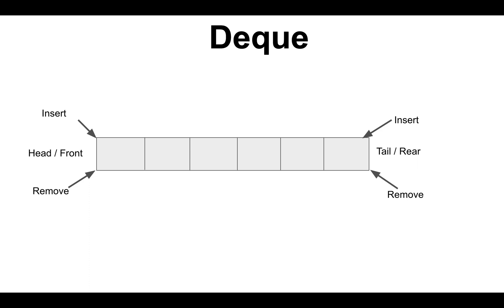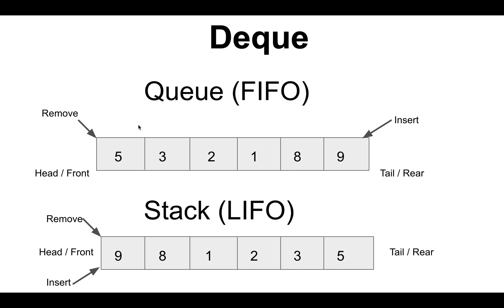In a queue, we enqueue or insert elements from one end and delete from another end. So 5 is inserted first, then 3, then 2, then 1, then 8, then 9. When we remove elements, 5 will be removed first, then the pointer moves to 3 — so it's a first-in-first-out data structure. In a stack, the element pushed last is the first to be popped out.